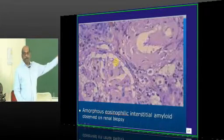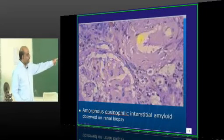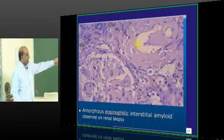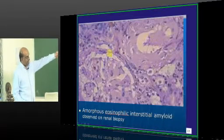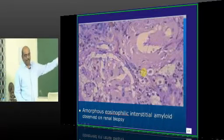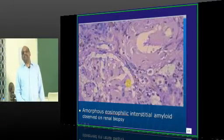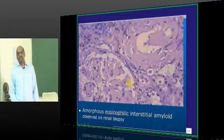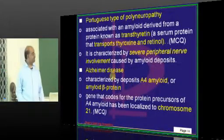This is an example of eosinophilic, amorphous amyloid deposited interstitially in the kidney in a patient with renal amyloidosis, which is generally seen in secondary amyloidosis.